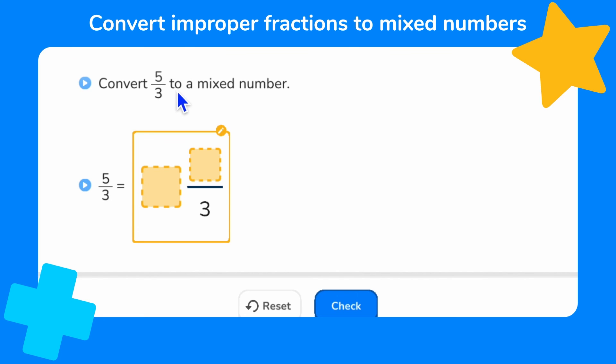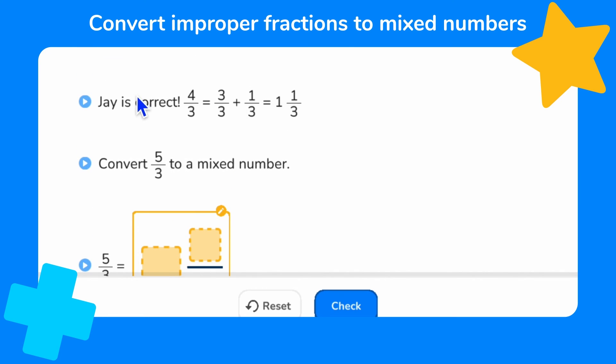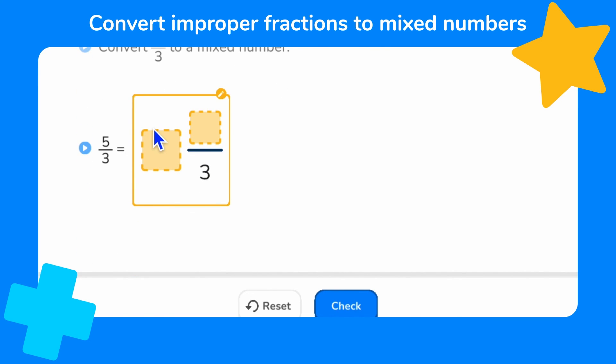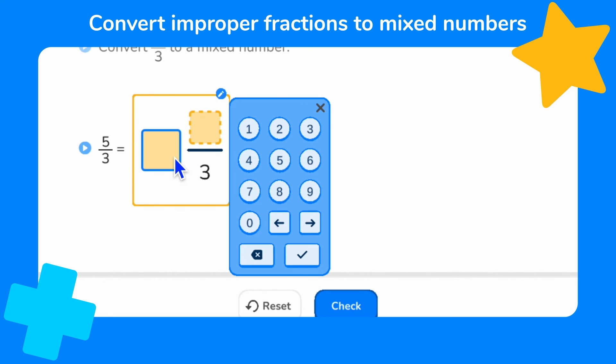Now we need to convert 5 thirds to a mixed number. So have a think. Perhaps this will help you. Now we know that 3 thirds are equal to 1 whole. So let's put our 1 as the whole number. And how many thirds would be left over? Have a think and then head to the description box to check your answer.